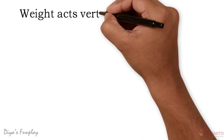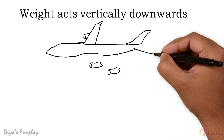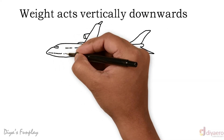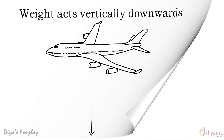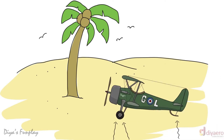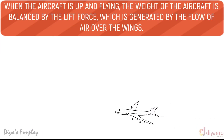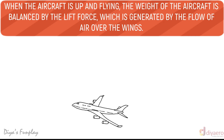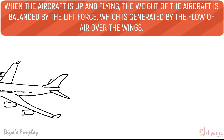Like all objects on Earth, an aircraft has weight — the force of gravity — which acts through the centre of the aircraft in a vertical direction towards the centre of the Earth. When an aircraft is on the ground, its weight is balanced by the reaction force of the ground. When the aircraft is flying, the weight is balanced by the lift force, which is generated by the flow of air over the wings.